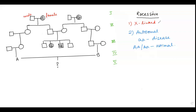In the case of X-linked recessive, females having both recessive alleles on their X chromosomes will be affected. In the case of males, only one X chromosome is present, so if that one chromosome carries the affected allele, the male will be affected.